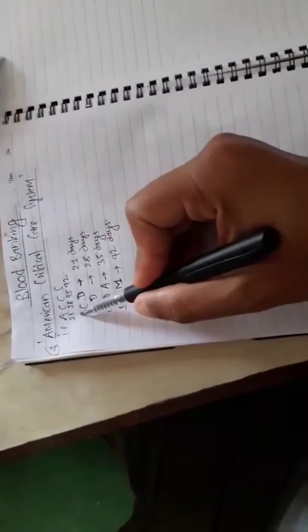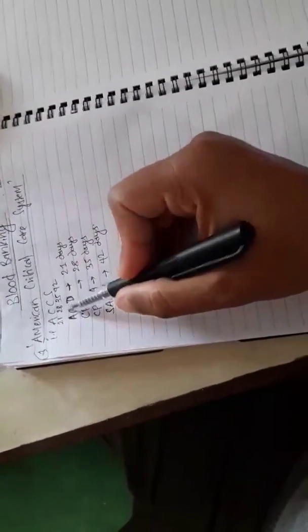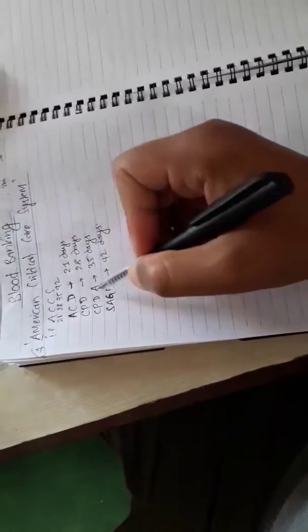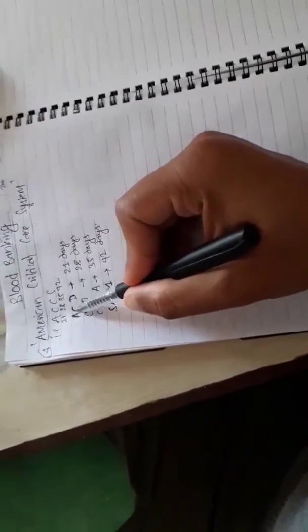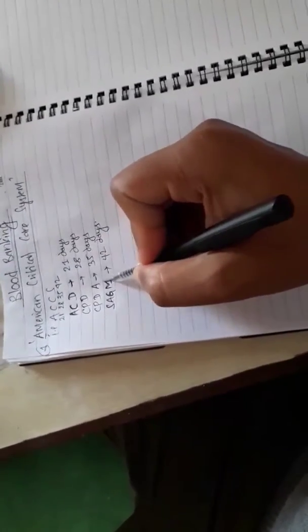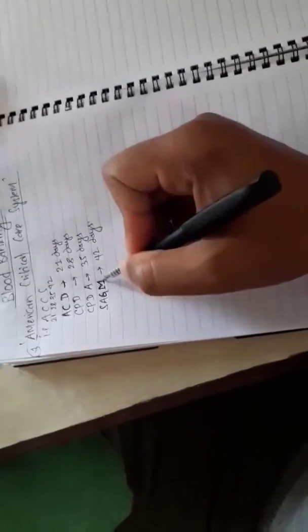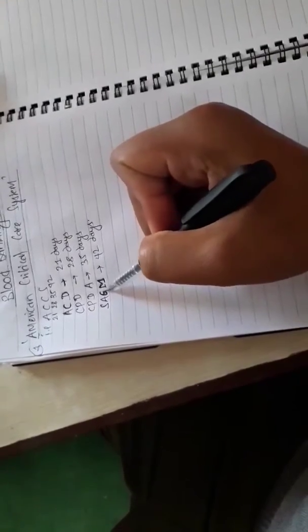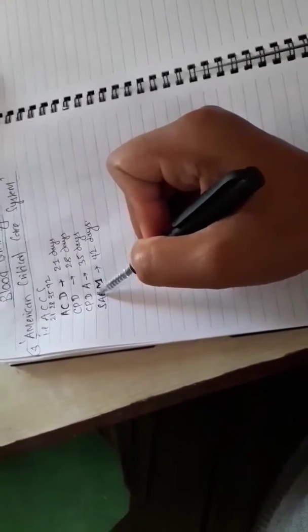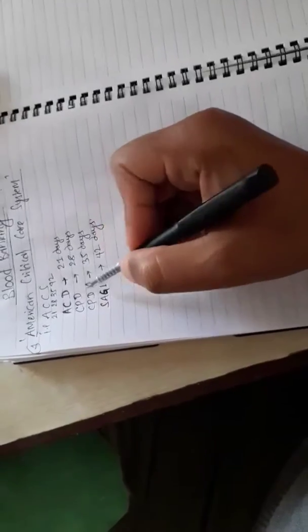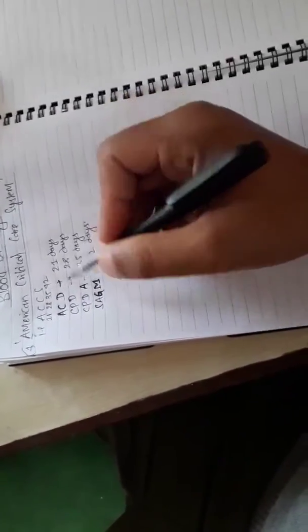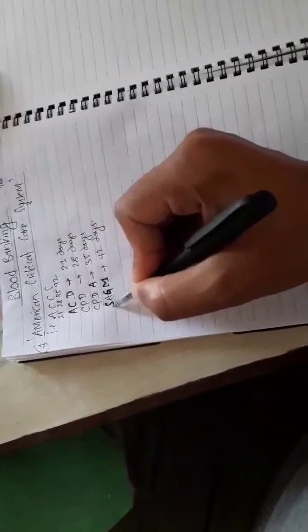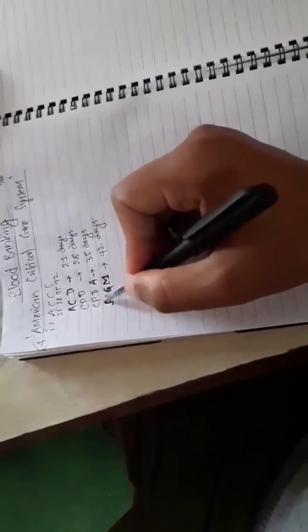Now regarding why citrate, dextrose, phosphate, adenine, and saline are present in the preservatives: citrate and mannitol help in maintaining the membrane stability of RBC so that hemolysis does not occur. Dextrose and glucose are there for providing energy to the RBC by glycolysis. Phosphate and adenine are there for the supply of ATP, and saline is for maintaining the normal osmolality of the environment so that hemolysis does not occur.